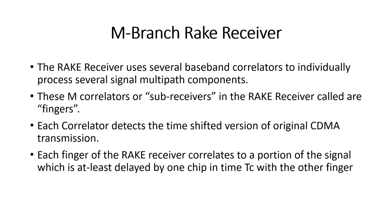The rake receiver uses several baseband correlators to individually process several signal multipath components. These M correlators, or sub-receivers, in the rake receiver are called fingers. The name 'rake' comes from the gardening tool used to collect grass — similarly, the rake receiver collects the actual signal from available multipaths.